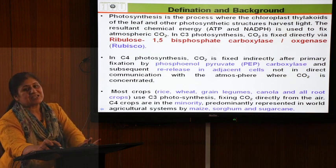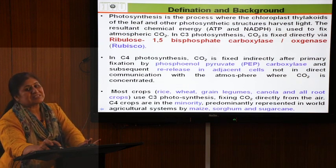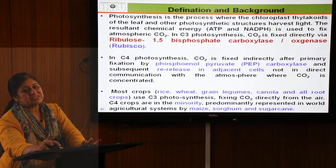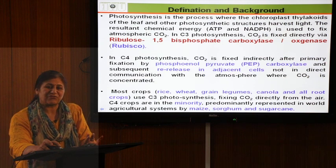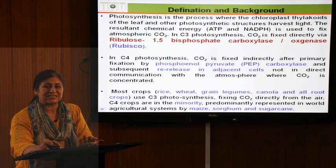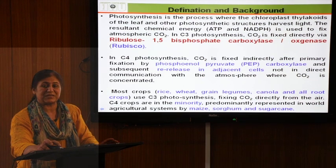These structures harvest light — sunlight — and the resultant chemical energy is converted into ATP and NADPH. This ATP and NADPH is then used to fix atmospheric CO2. The green plant area must fix sunlight and convert it into chemical energy in the form of ATP and NADPH.